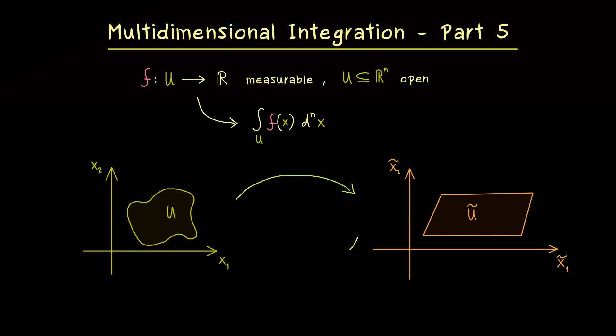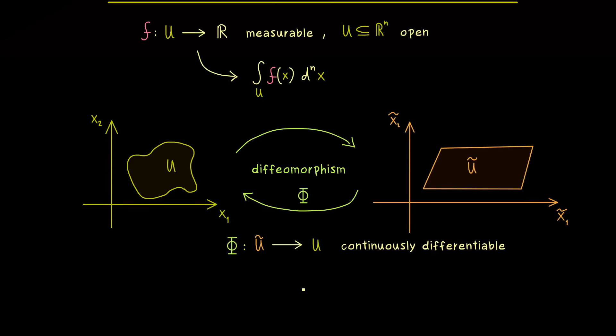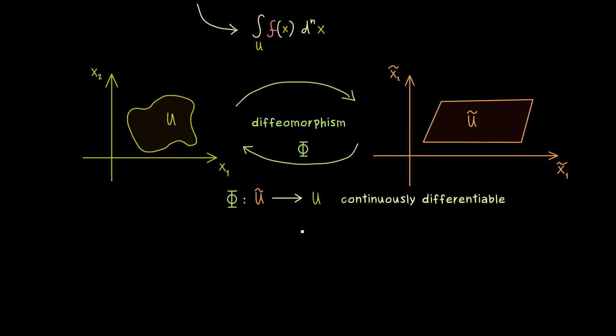And obviously it would also be nice to have a bijection here, so we can go back and forth between U and U tilde. In fact the best case for our calculation rule would be to have a diffeomorphism between them. And this one I want to denote by capital Phi. Hence Phi maps U tilde into U. So please note we have an n-dimensional input and an n-dimensional output. And we want that the map is continuously differentiable. And now to make this into a diffeomorphism we need that the inverse exists. So we need a bijective map.